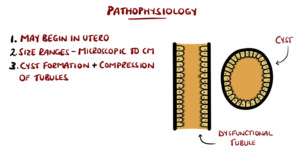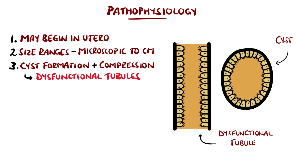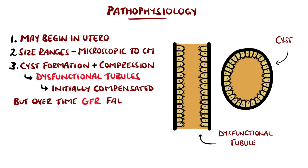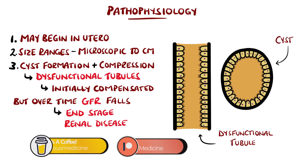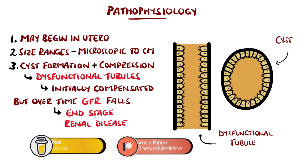This is worsened by the fact that as the cysts grow, they compress nearby nephrons, also making them dysfunctional. Initially, this may not be seen to have any clinical impact, as the remaining nephrons may increase their function to maintain the glomerular filtration rate. But as the disease progresses and more nephrons are affected, the remaining ones cannot make up the difference and overall renal function then deteriorates, eventually reaching end-stage renal disease.